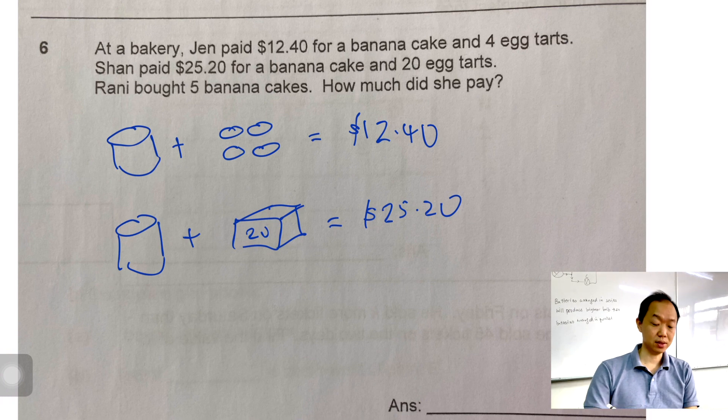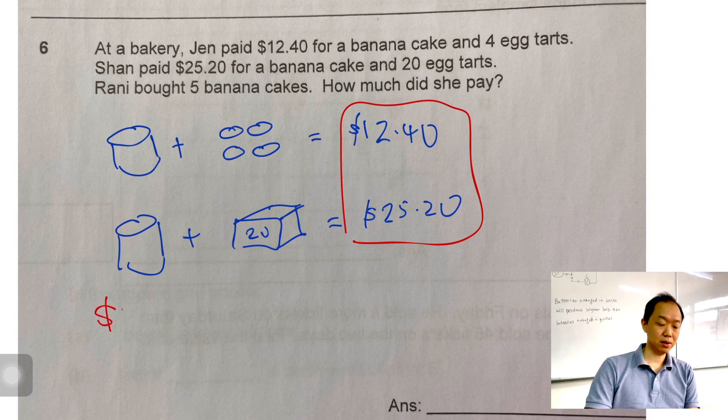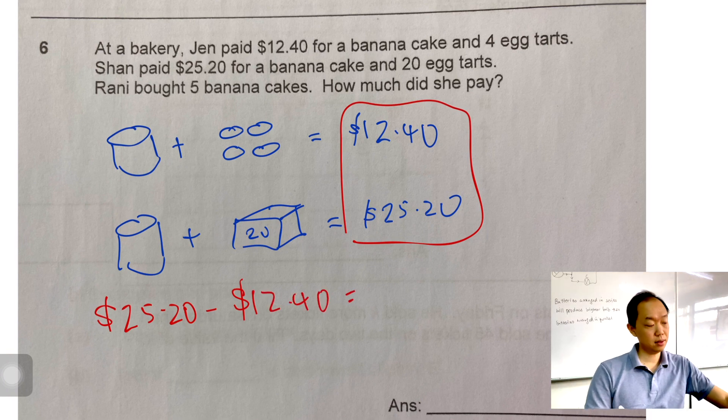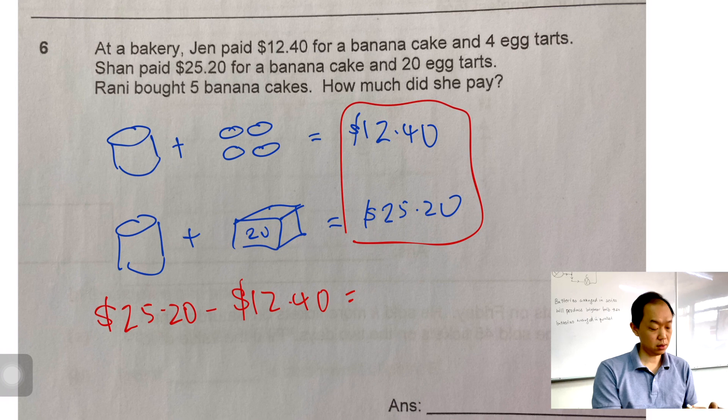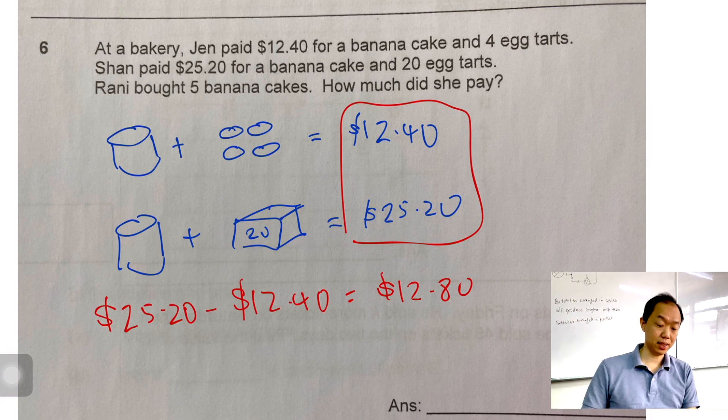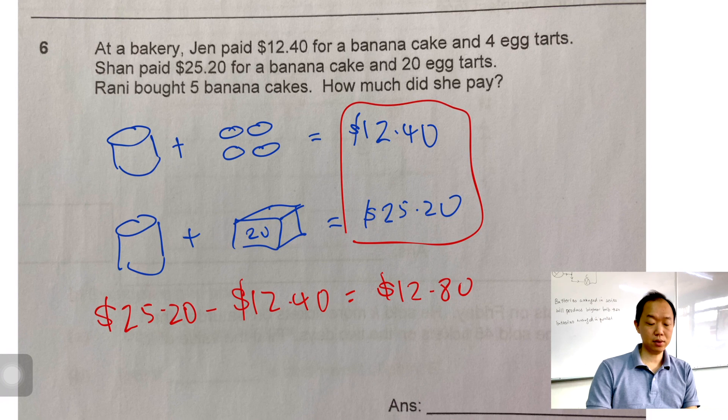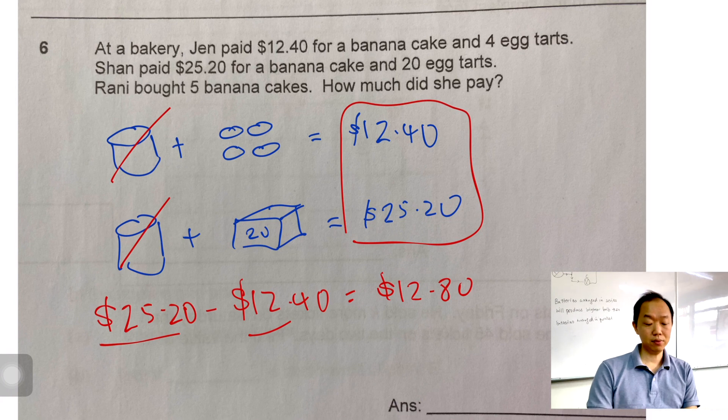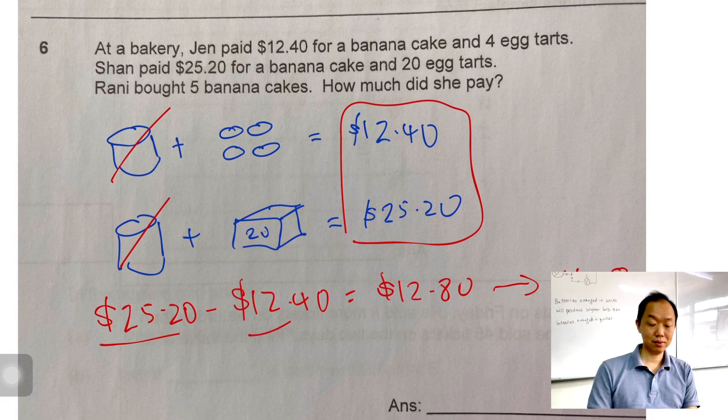So you just have to find the difference. What difference are we finding? We're going to find the difference between this and this. So if I take $25.20, take away $12.40, I'm going to get $12.80. So you take this $25 and you take away this, these two are cancelled off. So no more banana cake. But the difference is the number of egg tarts which is equivalent to 16 egg tarts.